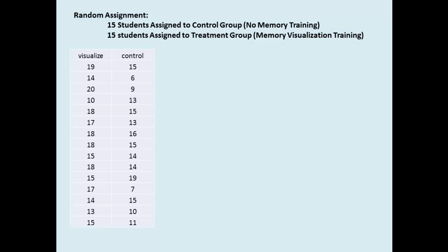Fifteen students were randomly assigned to the control group, meaning they got no memory training, and fifteen were assigned to the treatment group and were told how to visualize to improve their memory.